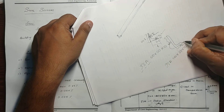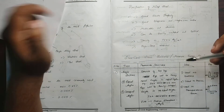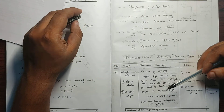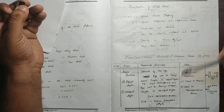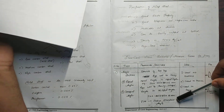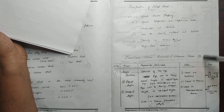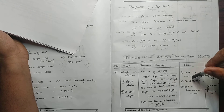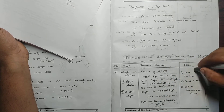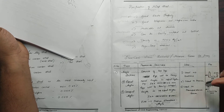ISA sections — Indian Standard Angles — are used as battens, in roofing, and as truss members. They are used in the transmission of loads and in various structural applications.